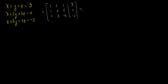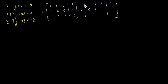Now I want to get this augmented matrix into reduced row echelon form. I have a leading 1 here — that's a pivot entry. Let me make everything else in that column equal to 0. I'm not going to change my first row: 1, 1, 1, and then 3. To zero out the second row, I'll replace it with the second row minus the first row: 1 minus 1 is 0, 2 minus 1 is 1, 3 minus 1 is 2, and 0 minus 3 is minus 3.